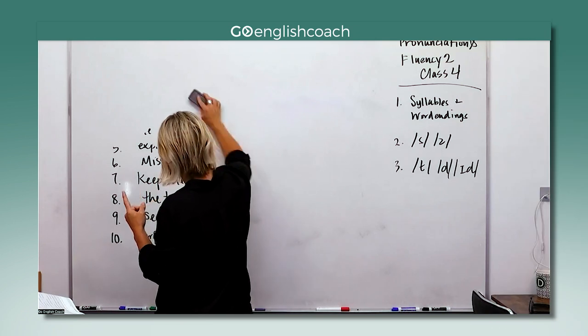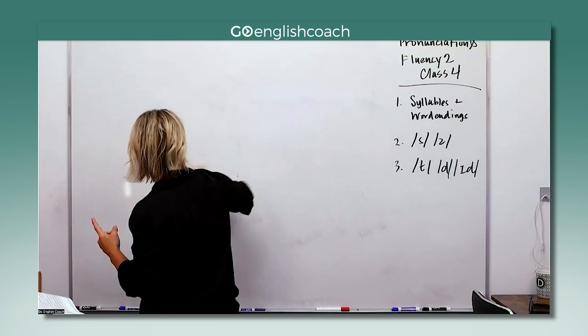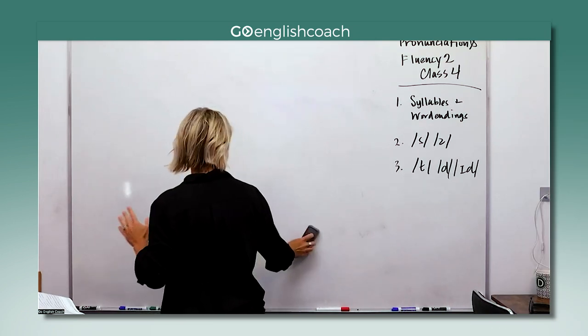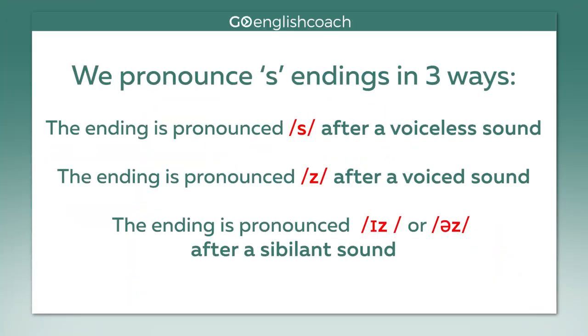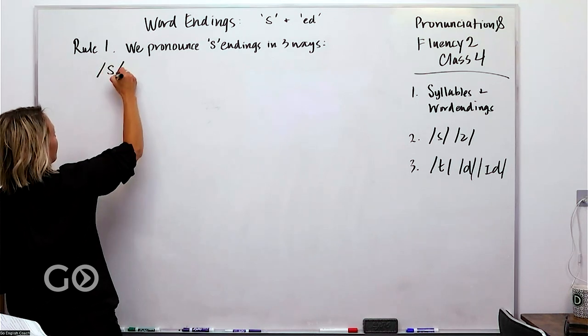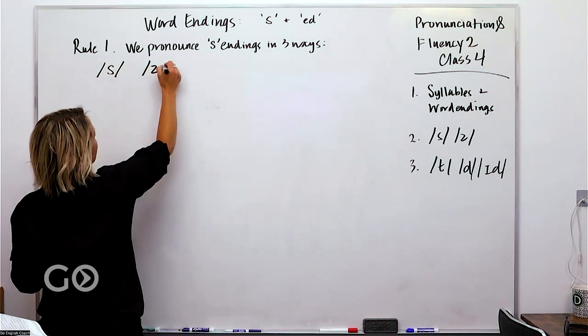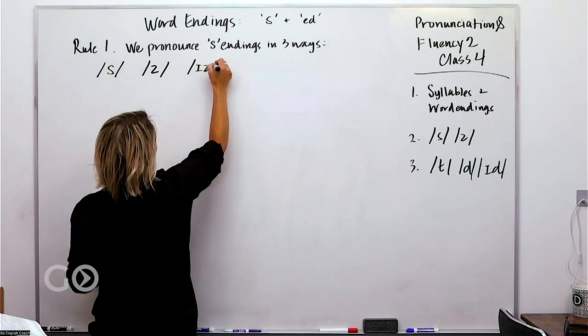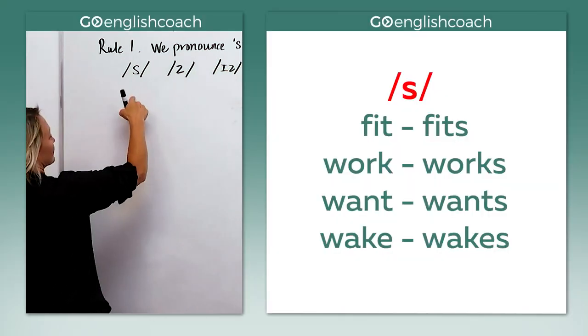You guys are going to be like, what? Wait, I don't even understand. What does that mean? And then it's going to be so easy. So we've got a rule about word endings. We pronounce S endings in three ways. We use three different sounds for endings. We've got S, a Z sound, or an I with a Z sound.